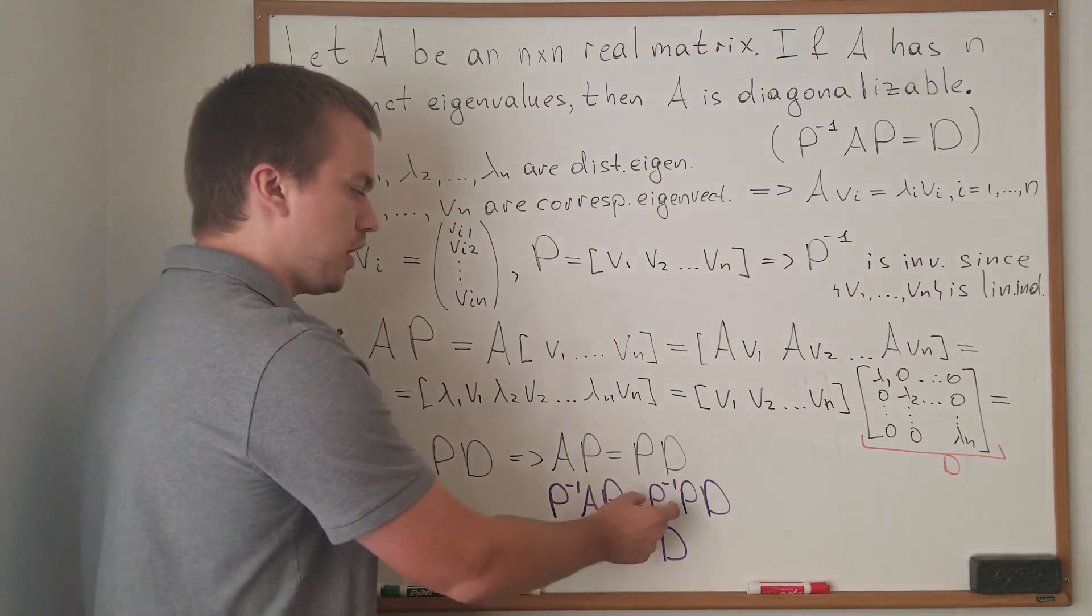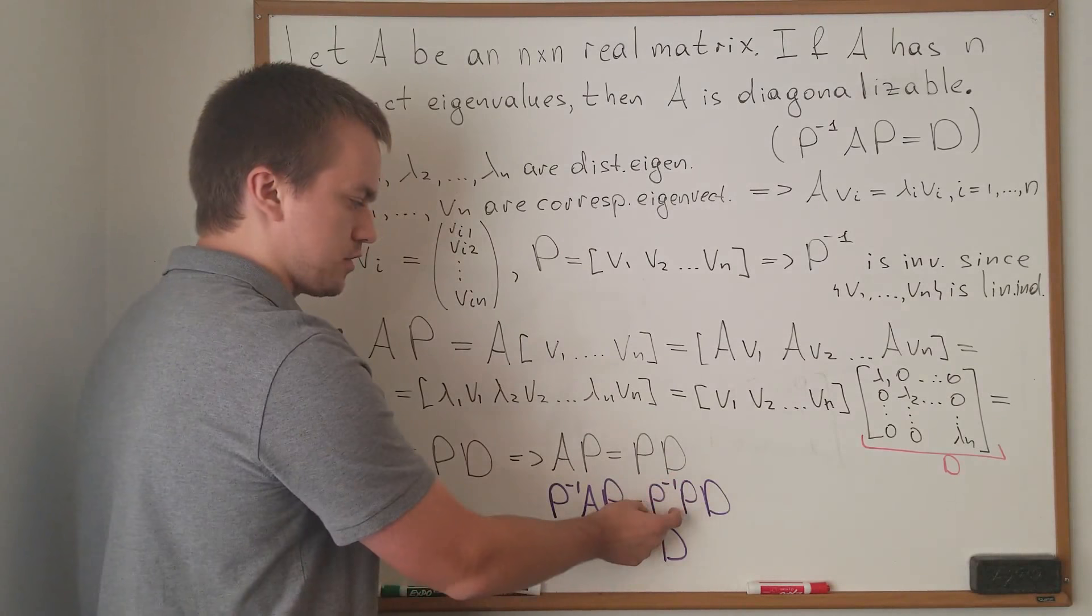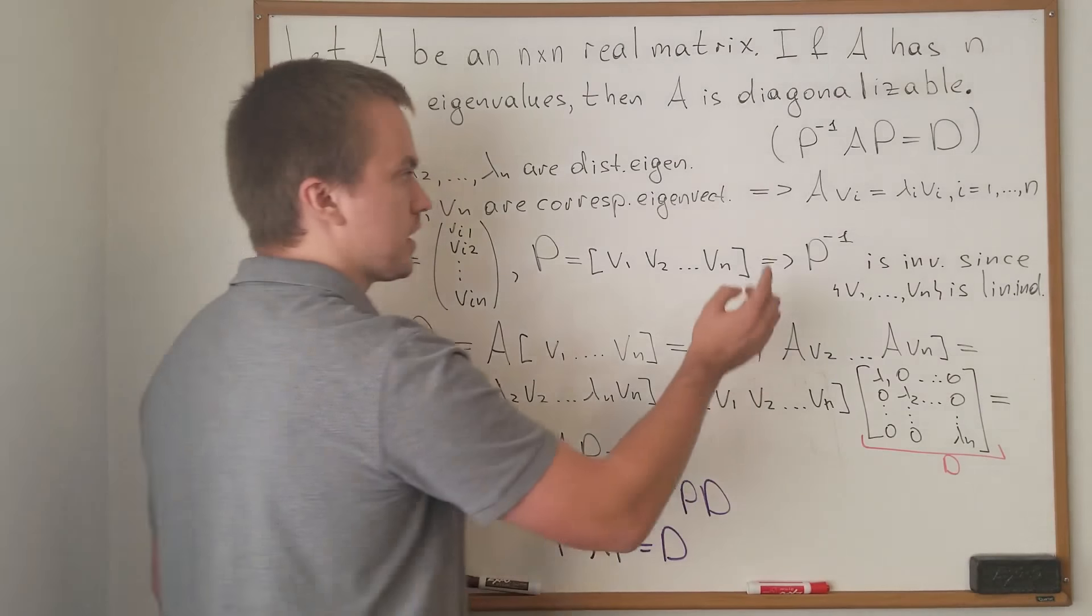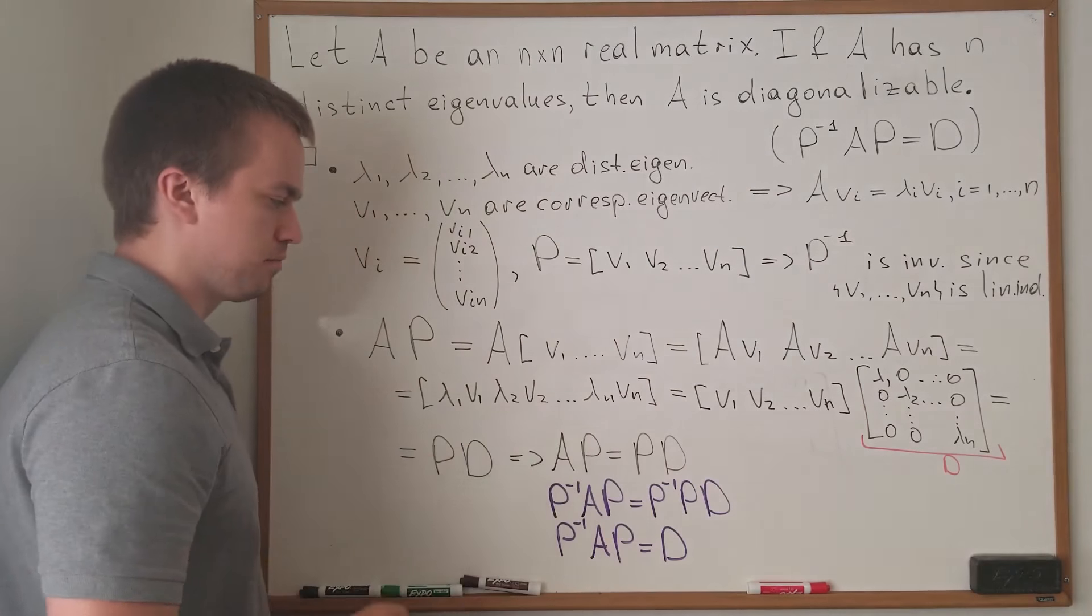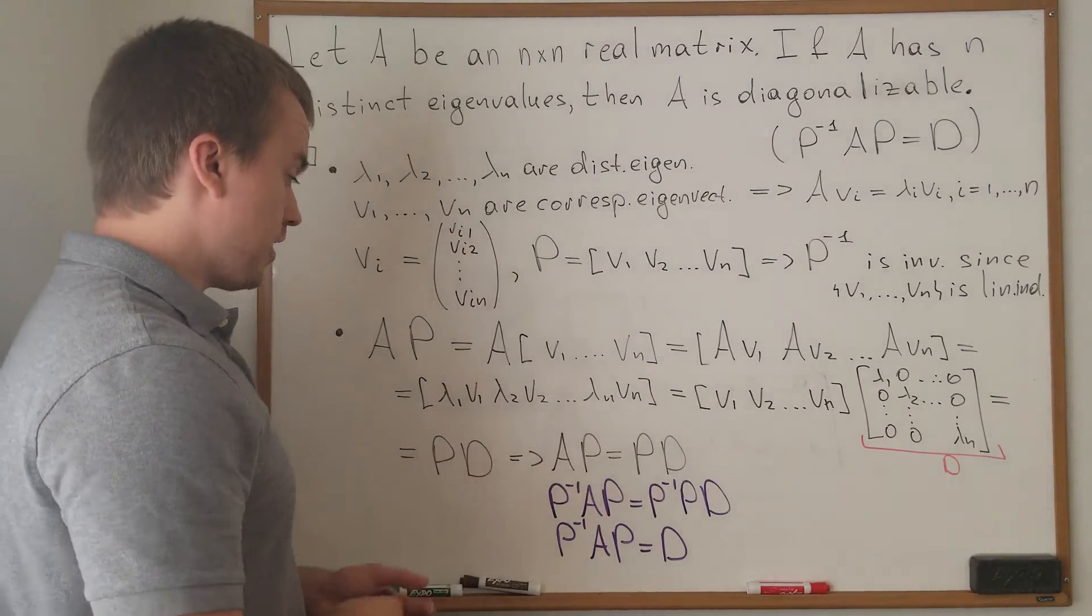And again, we are allowed to multiply by inverse of our matrix P because the set of our eigenvectors is linearly independent, so P inverse exists. This is really important. And we're done.